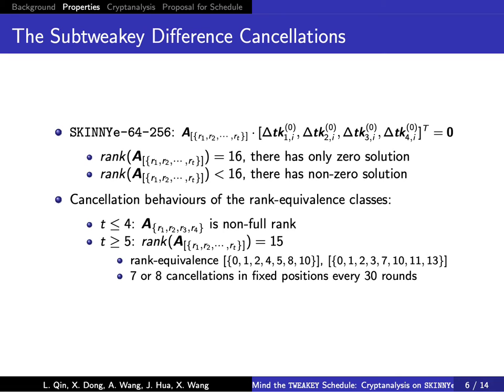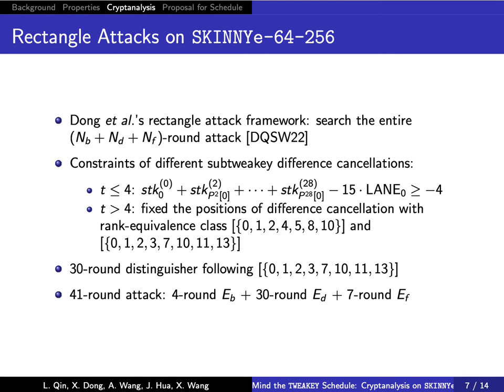Using all the non-full rank-equivalent classes in the upper table, we summarize several difference constellation behaviors. We take an automatic model, adding the difference constellation behaviors and searching the whole rectangle attack. In the 30-round distinguishing phase we found there are 8 constellations every 30 rounds. Then we give a 14+1-round rectangle attack.